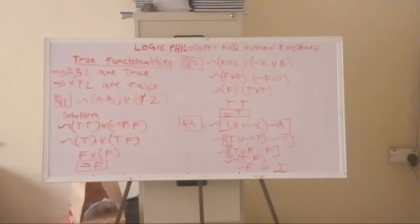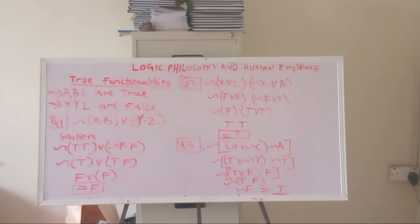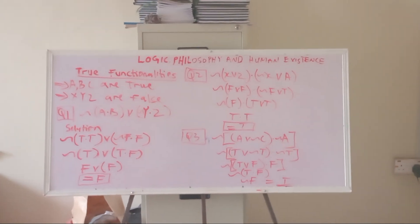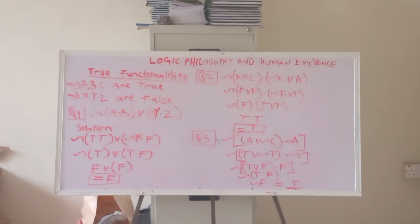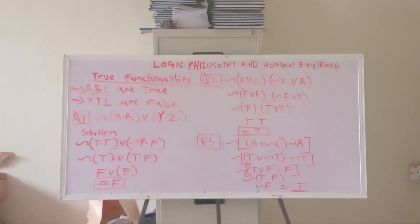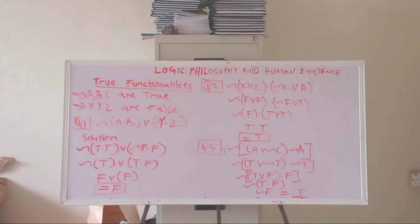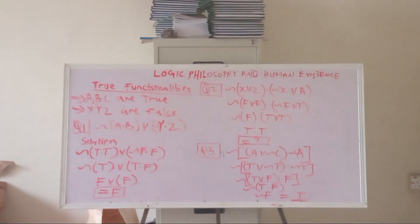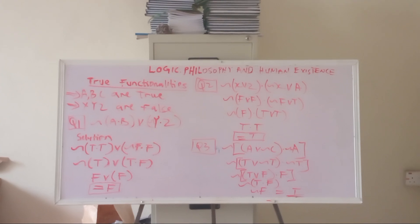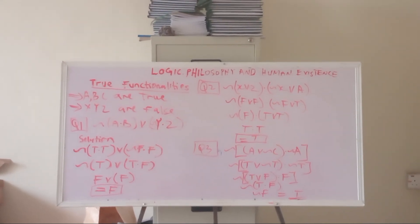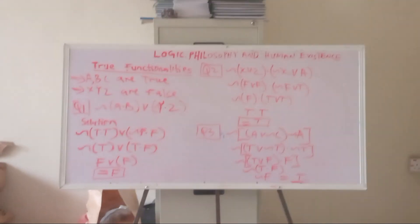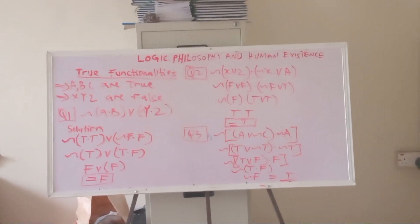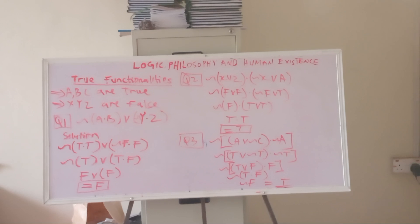Looking at the question on true functionalities — the instruction states that a, b, and c are true while x, y, and z are false. Assume any true statement to be a, b, or c and any false statement to be x, y, or z. The first equation is: ¬(a ∧ b) ∨ (¬y ∧ z).